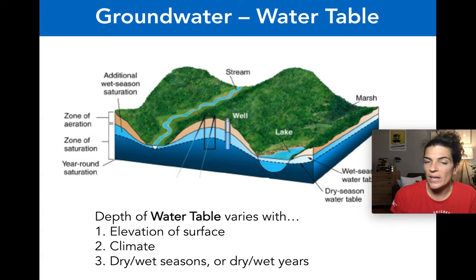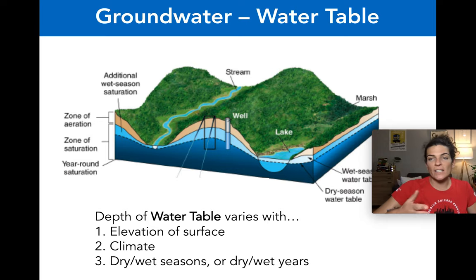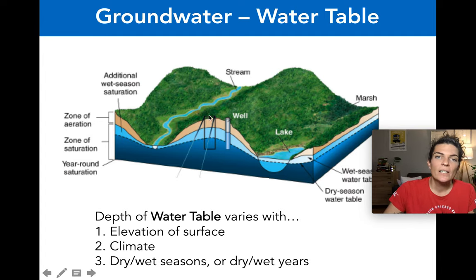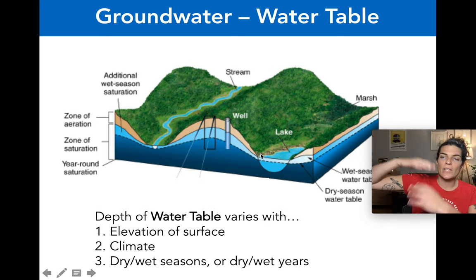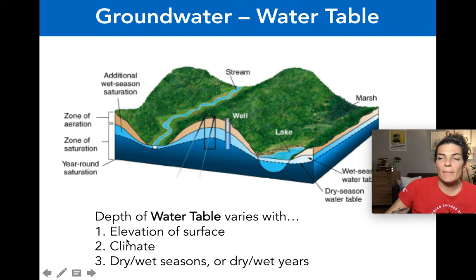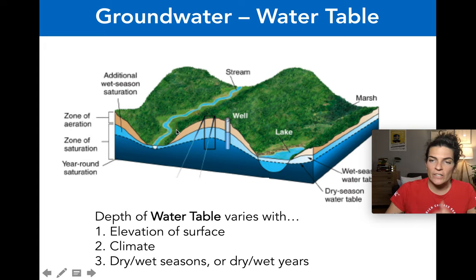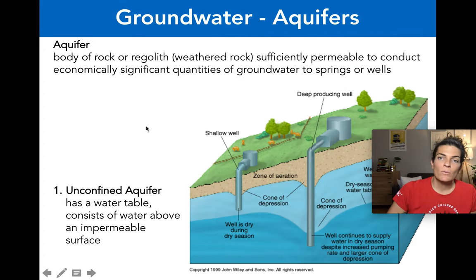The time required for recharge and discharge varies with flow path, porosity, and depth. Very deep groundwater may take millennia to recharge and discharge; near the surface it may take days. Recharge, discharge, and water table depth vary with elevation, climate, and dry or wet seasons. During a dry year, more discharge than recharge causes the water table to drop; during a wet year, it rises.